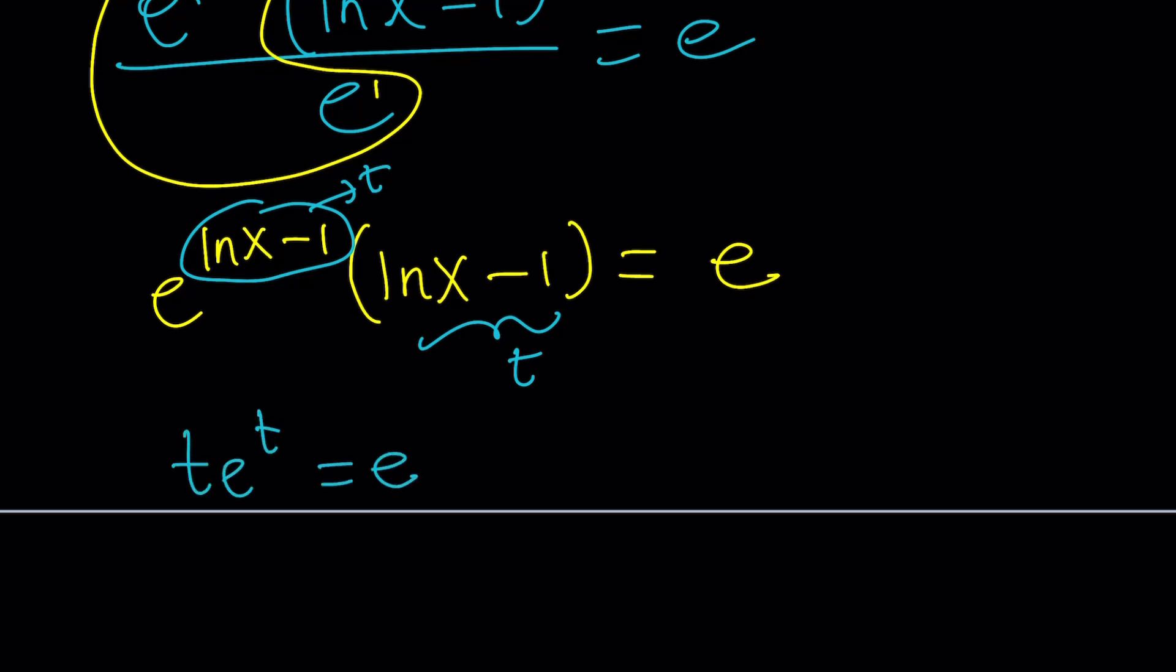So now we have T e to the t equals e. And obviously you can solve from here. Well, let's just do things the Lambert way. We're going to W both sides. And let me write it as follows. ln x minus 1 times e to the power ln x minus 1. So it looks more Lambert-ish. And then the e, I want to write it as 1 times e to the power 1. Can I? Because e is equal to 1 times e. And e is equal to e to the power 1.